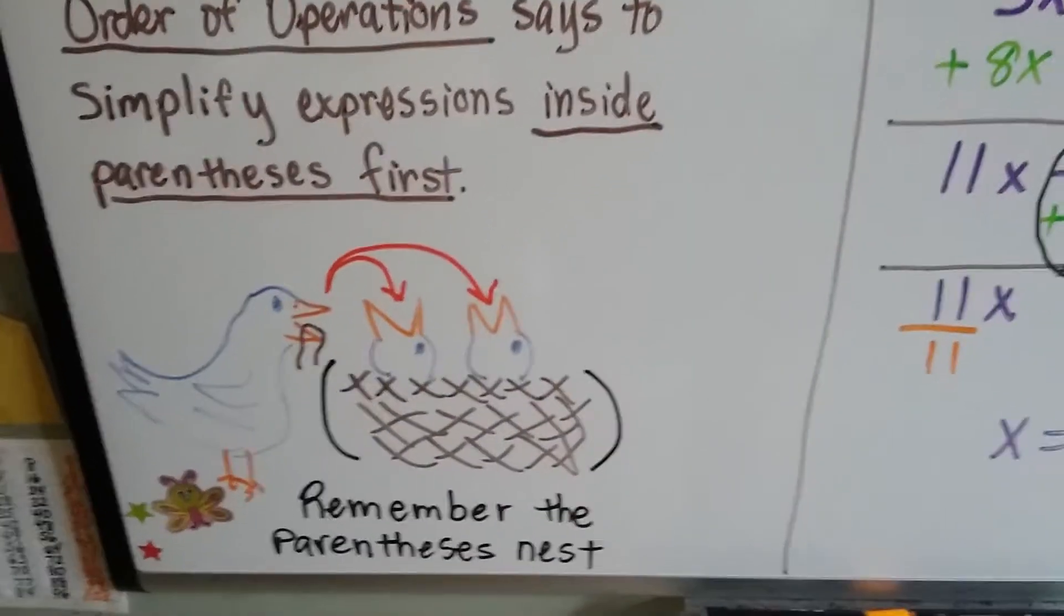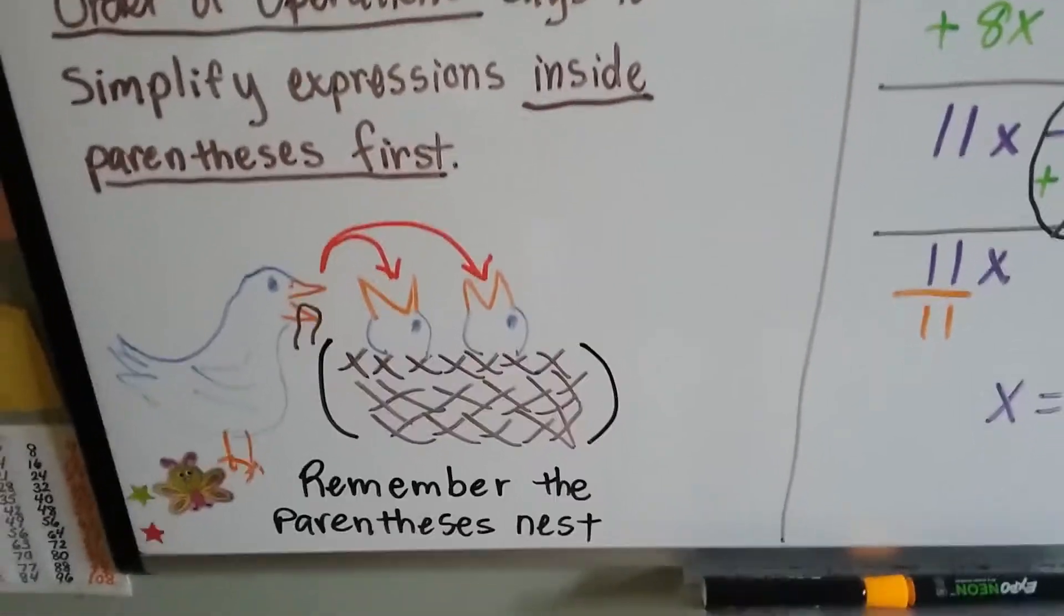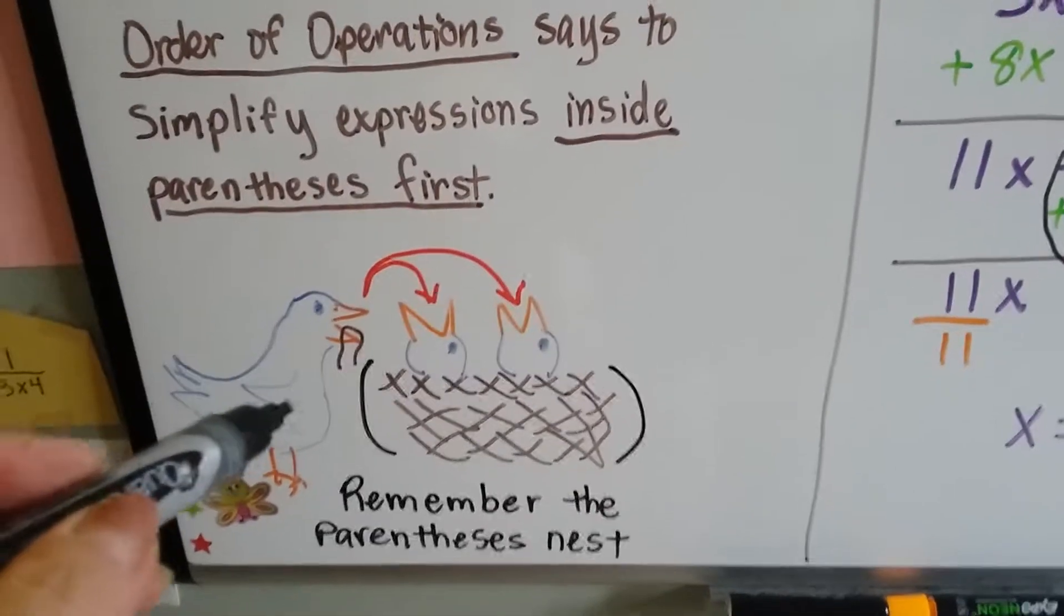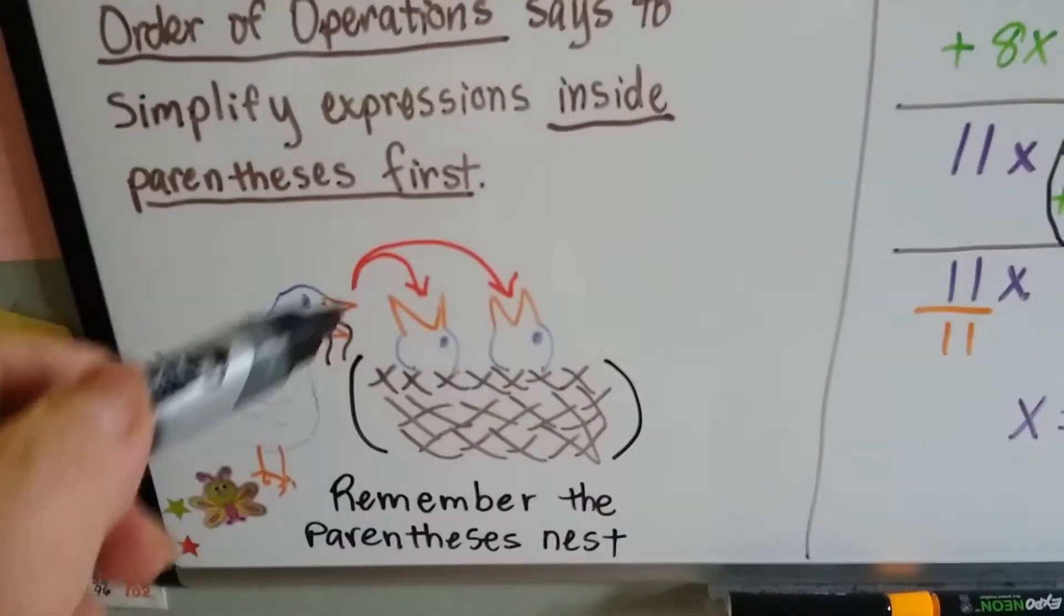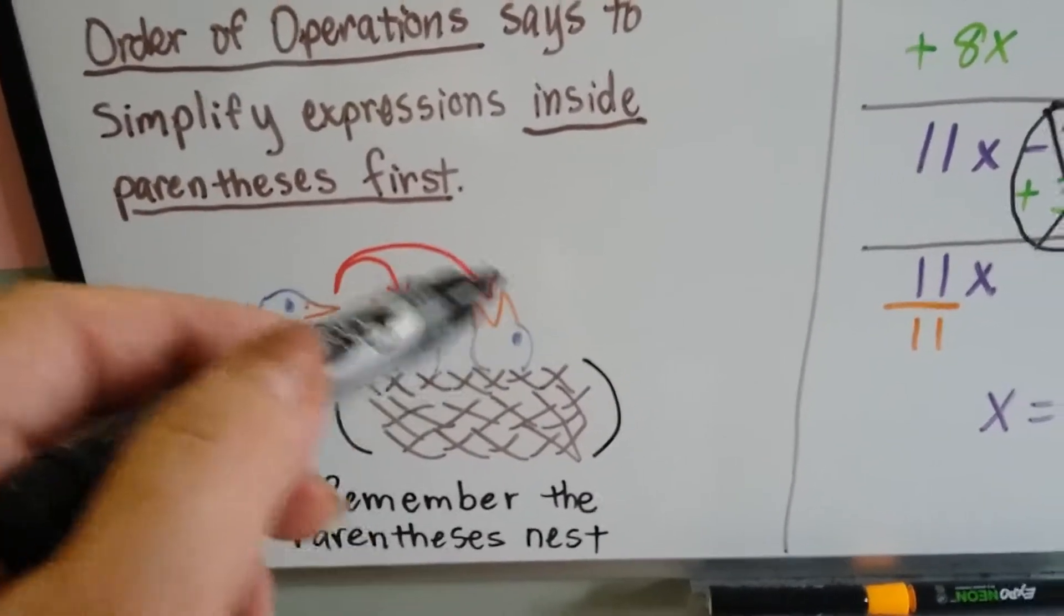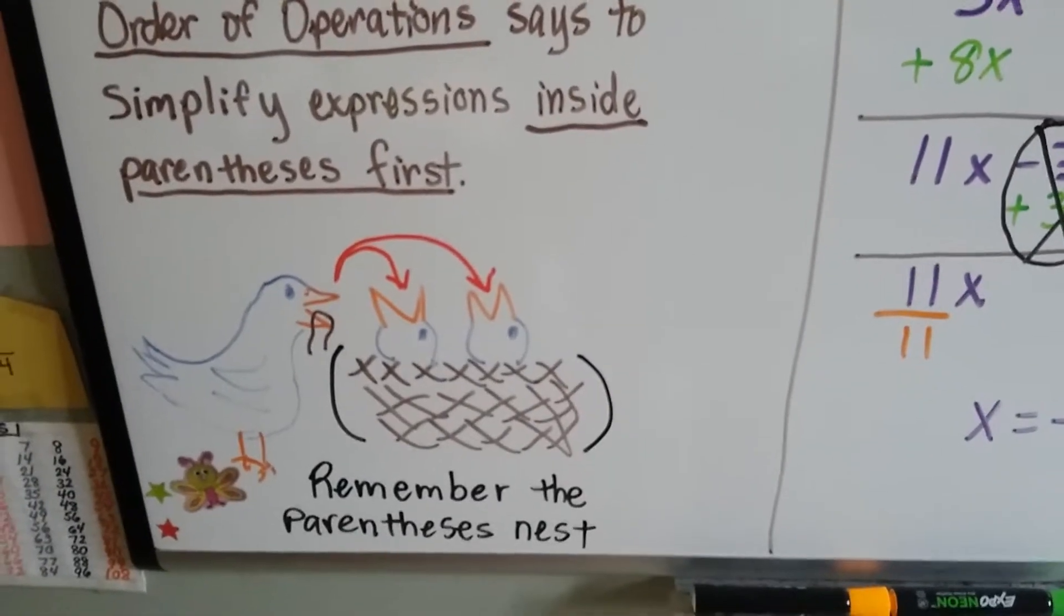Remember our parentheses nest, and the mother bird is the number that we're distributing. And she feeds each baby inside the parentheses. Everyone gets a term one time. Nobody gets left out.